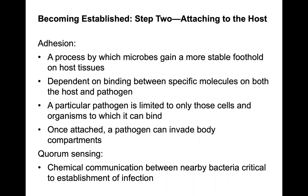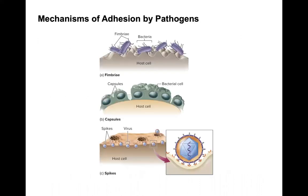Once you find a way into the host, step two is attaching to the host, which occurs by a few mechanisms. Adhesion is the process by which microbes gain a more stable foothold on host tissues, dependent on binding between specific molecules on both the host and pathogen. A particular pathogen is limited to only those cells it can bind to. Once attached, a pathogen can invade body compartments. We also have quorum sensing — chemical communication between nearby bacteria — which is critical to establishing infections. Bacteria use fimbriae to adhere to the host cell.